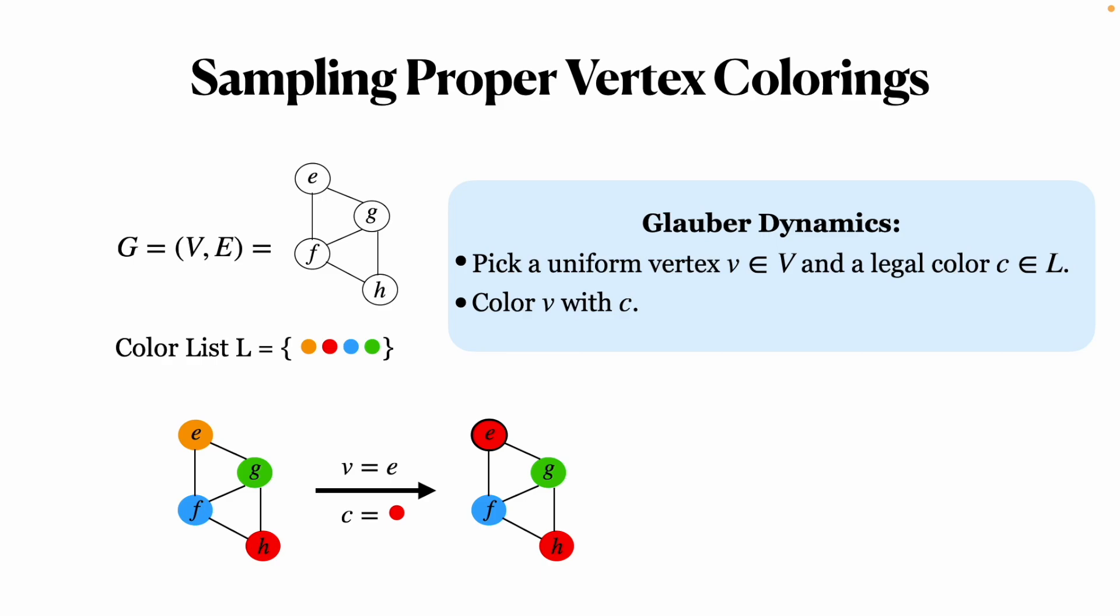And we proceed to recolor E with red. Repeating this step for sufficiently many times, the sequence of colorings converges to a uniform distribution over all proper colorings.